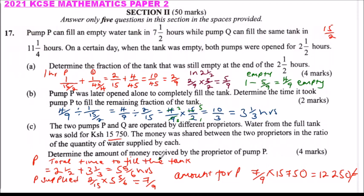To summarize: you add 3 and a third plus 2 and a half to get 5 and 5 over 6. In one hour, Pump P supplies 2 over 15 of the tank. Multiplying gives the total amount supplied by P. The marks should add up to 10 for this question.